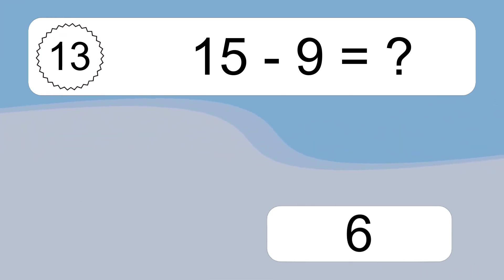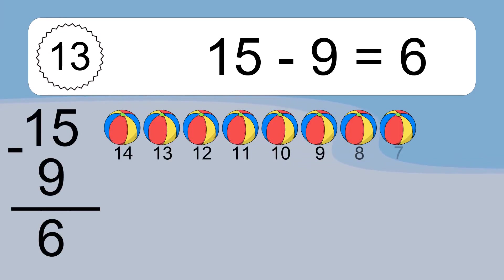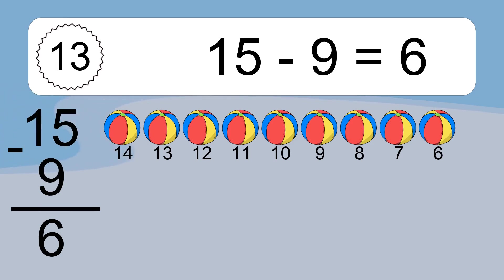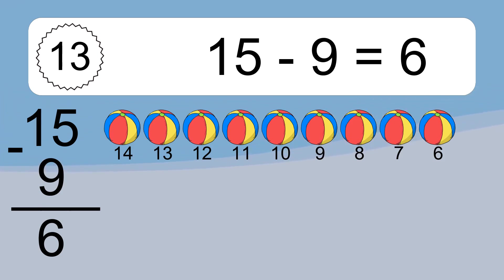15 minus 9 equals what? 15 minus 9 equals 6. Let's count it: 14, 13, 12, 11, 10, 9, 8, 7, 6.